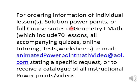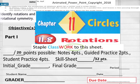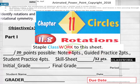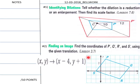Hello everybody, getting ready to do lesson 11.8 of Geometry One Math. Part one of 11.8 is rotations. We have a class worksheet here worth 32 points and then 20 points worth of notes.